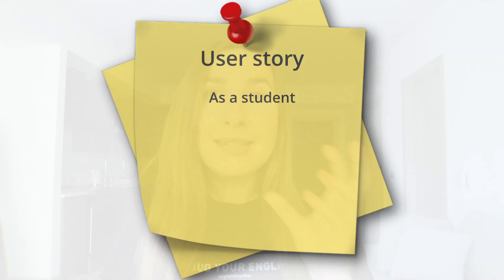An effective user story consists of three parts. First, you have to write from a particular persona perspective. That's why you say 'as a who.' For example, 'as a student' — the user has to be able to do this.